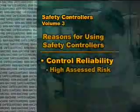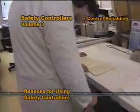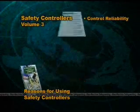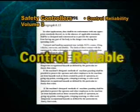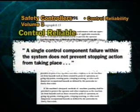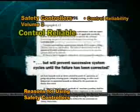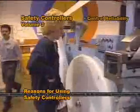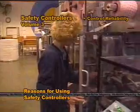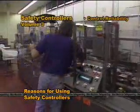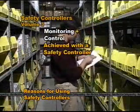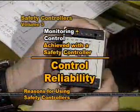Safety controllers can also be used where a system designer wishes to satisfy control reliability requirements. A safety system is control reliable only if it's designed so that any single component failure does not prevent the machine from stopping and does prevent it from restarting until the fault has been corrected. Achieving control reliability requires constant monitoring of the safety system to permit detection of a fault that might prevent machine stoppage. Once detected, the machine must be prevented from restarting until the fault has been corrected. This monitoring and control can be achieved with an appropriate safety controller, thus realizing control reliability.